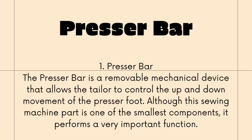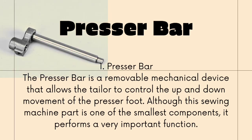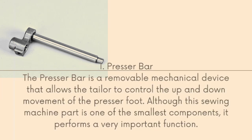First, we have the presser bar. The presser bar is a removable mechanical device that allows the tailor to control the up and down movement of the presser foot. Although this sewing machine part is one of the smallest components, it performs a very important function.